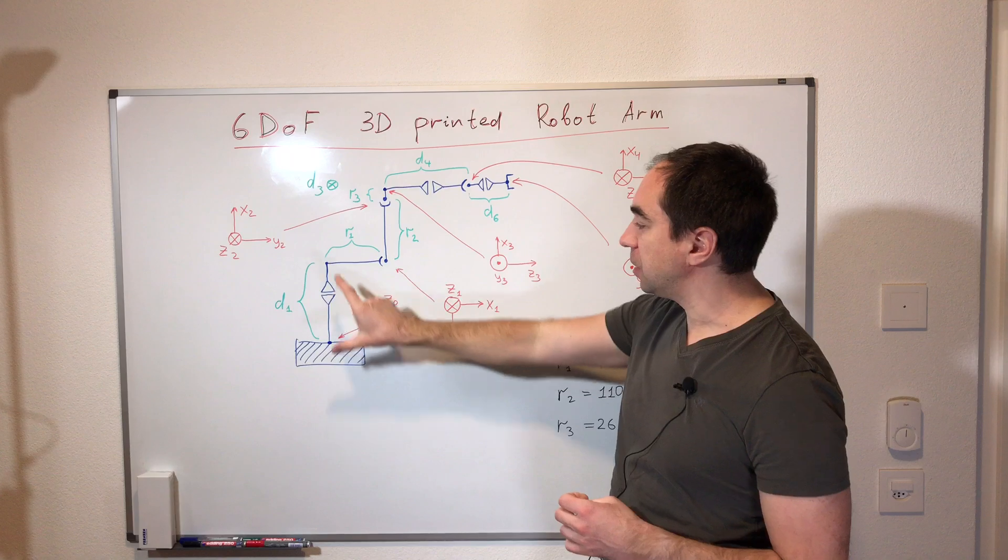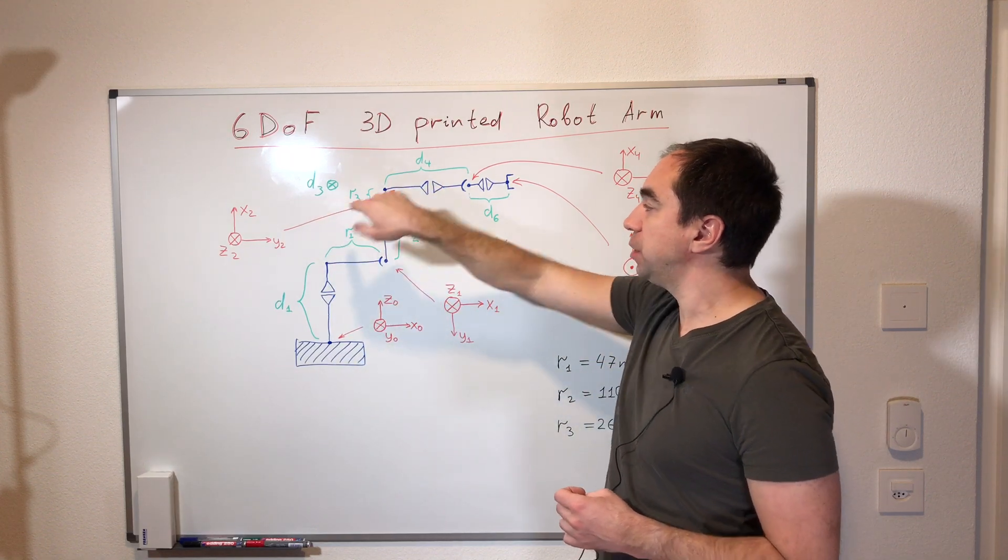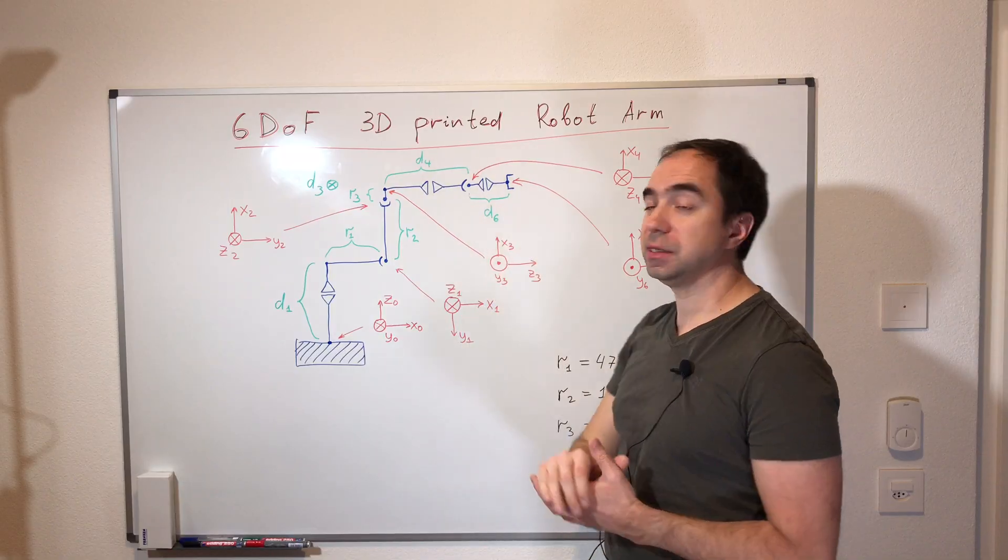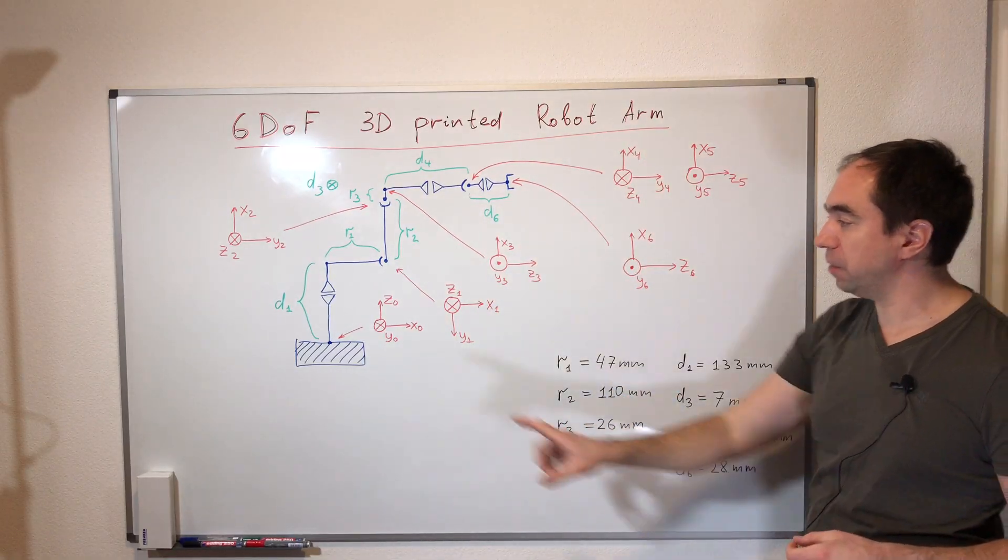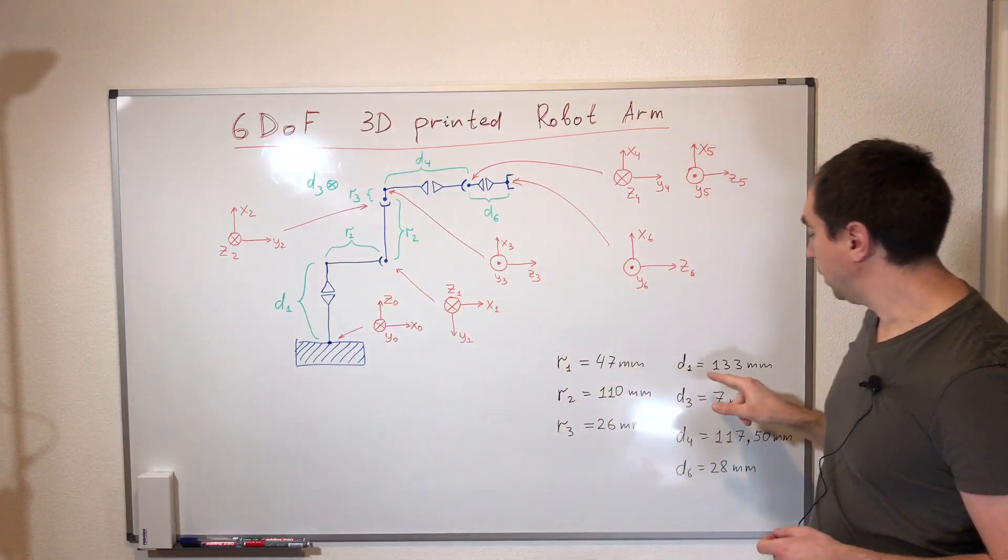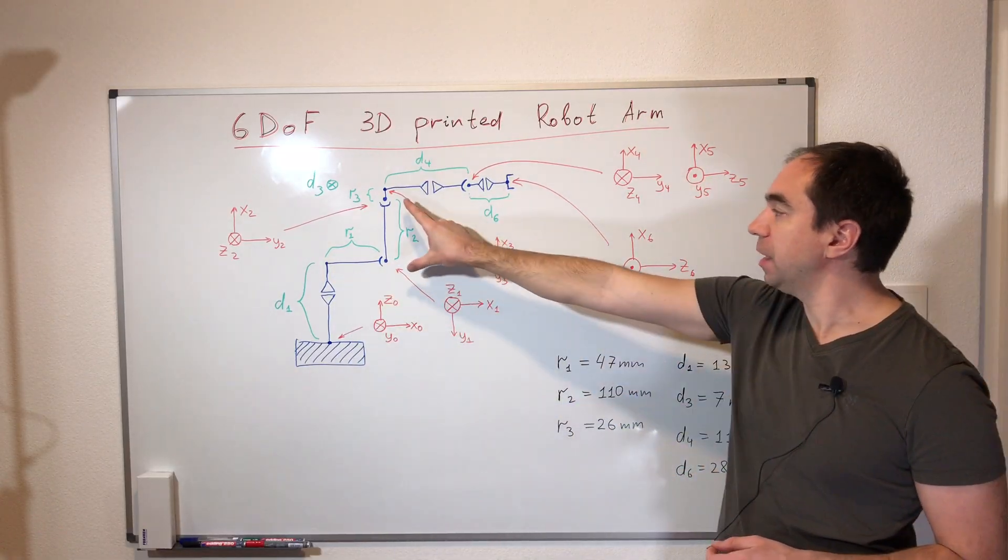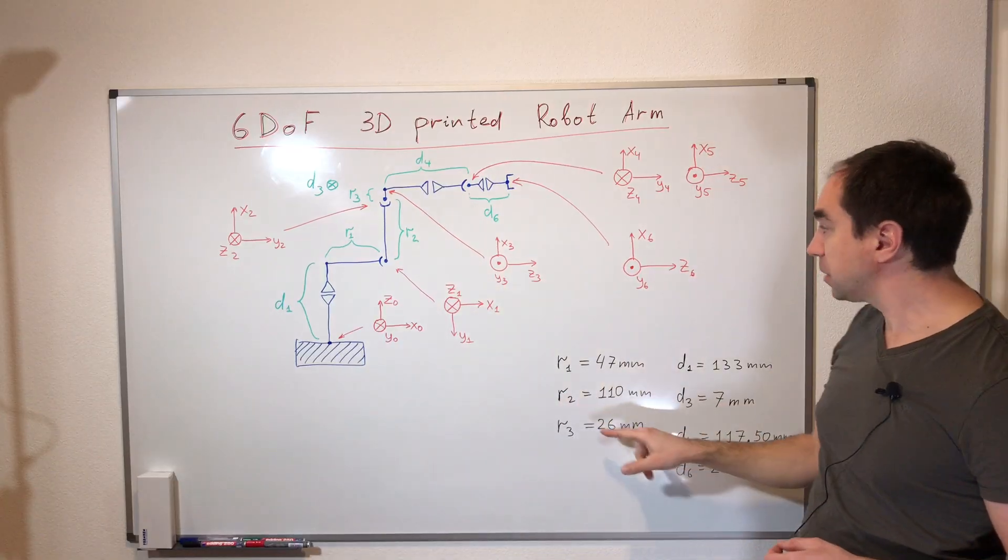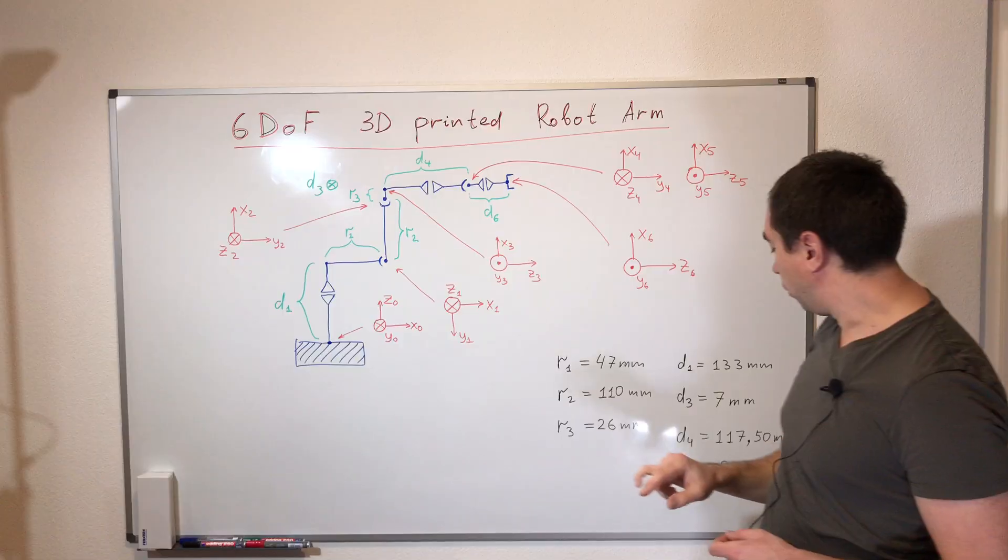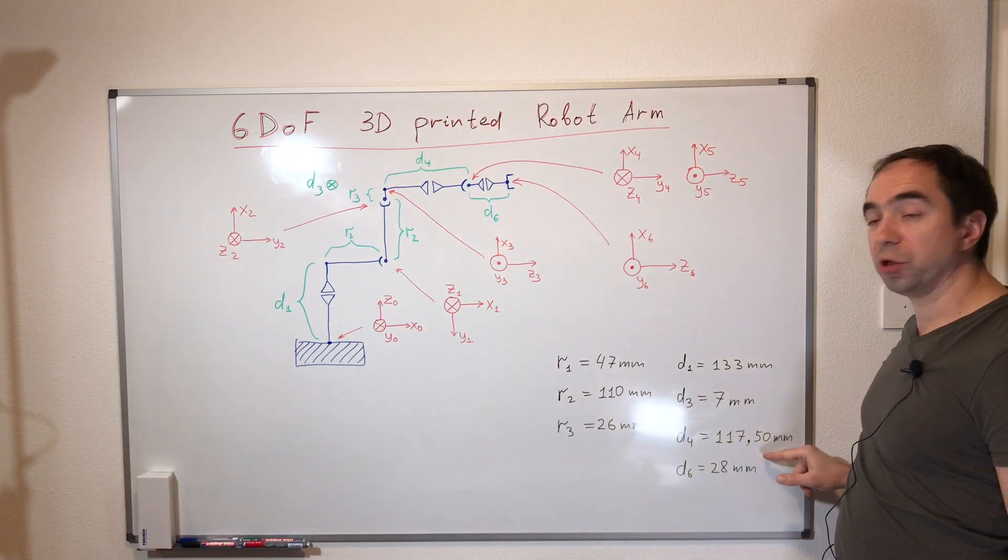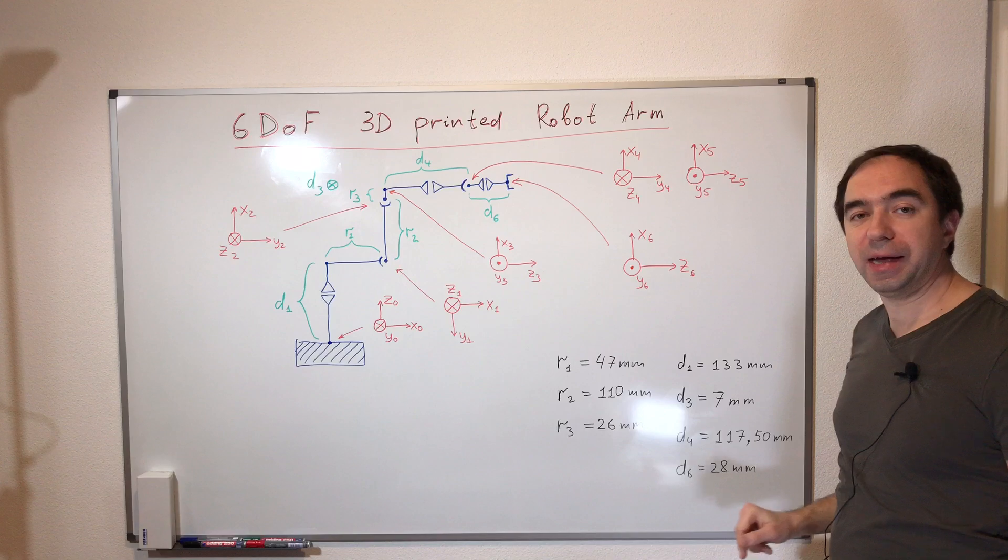And the dimensions are, this is D1, R1, R2, R3, D3 goes inside, D4 and D6. And these values are equal to R1 is 47, D1 is 133, R2 is 110, R3 is 26, D3 is 7 millimeters, D4 is 117.5 millimeters, and the last one D6 is 28 millimeters.